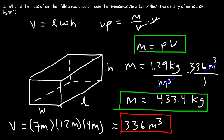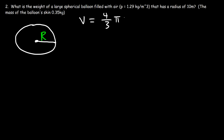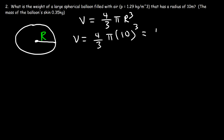Now let's move on to the second question: what is the weight of a large spherical balloon filled with air that has a radius of 10 meters? We're given the mass of the balloon's skin. The volume of the balloon is (4/3)π r³, so it's (4/3) times π times 10³, giving a volume of 4,188.8 cubic meters.